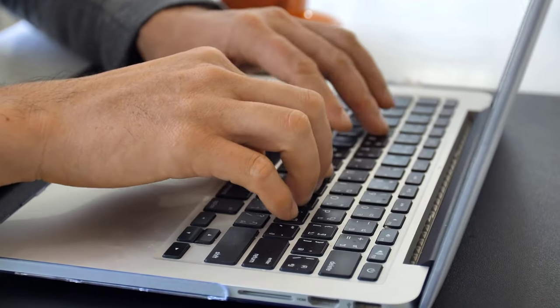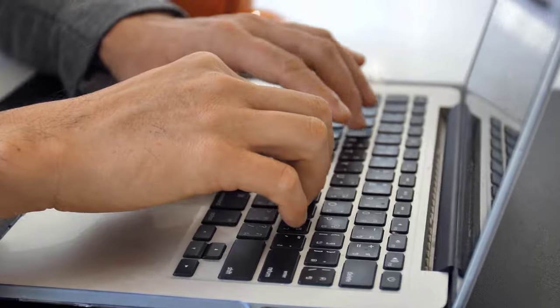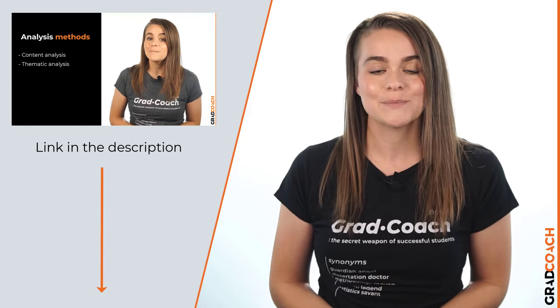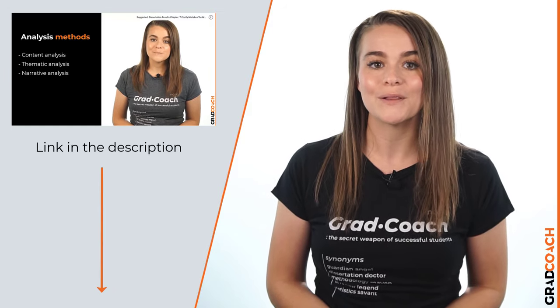A good discussion chapter takes the findings that you presented and described in the results chapter and explains what they mean in relation to your research aims and research questions, as well as how they fit into the existing literature. If you are not sure how this differs from the results chapter, we have a separate video explaining that chapter in detail — I will include the link below.